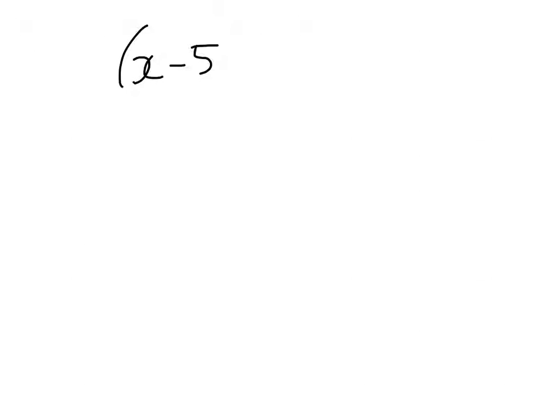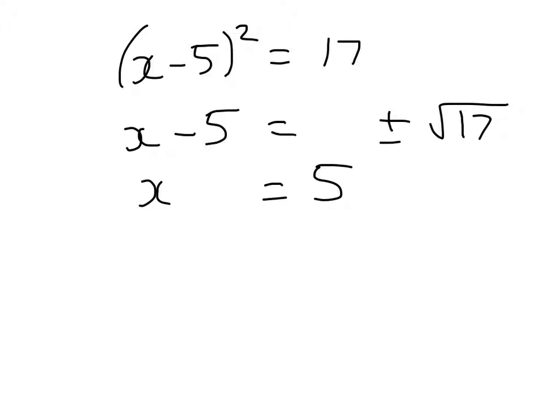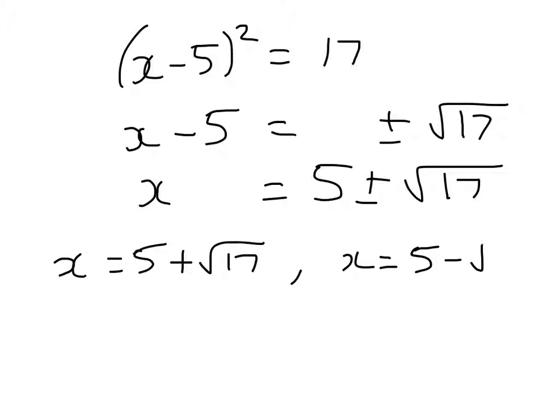So x minus 5 squared is equal to 17. x minus 5 is equal to plus or minus root 17. So x is equal to 5 plus or minus the square root of 17. So my x-intercepts are either x equals 5 plus root 17 or x equals 5 minus root 17. So I haven't done that on my calculator because my calculator is sitting at school but it will be equal to 9 point something and this one will be equal to 0 point something.